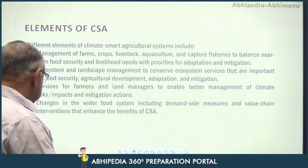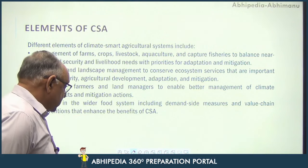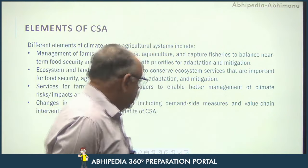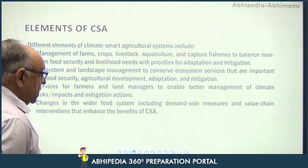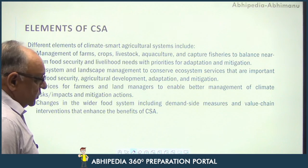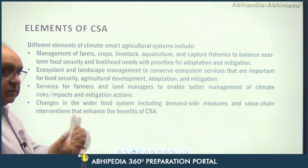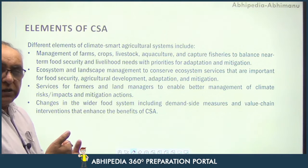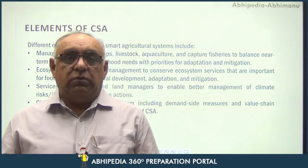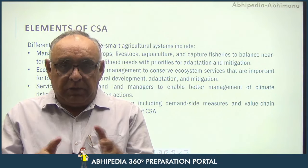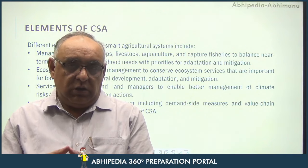Another element involves changes in the wider food system, including demand-side measures and value chain interventions that enhance the benefits of Climate Smart Agriculture. We need to take demand-side measures and do value chain interventions so that food security is enhanced and climate change is slowed down. This is all about striking a smart balance between food security and climate change.